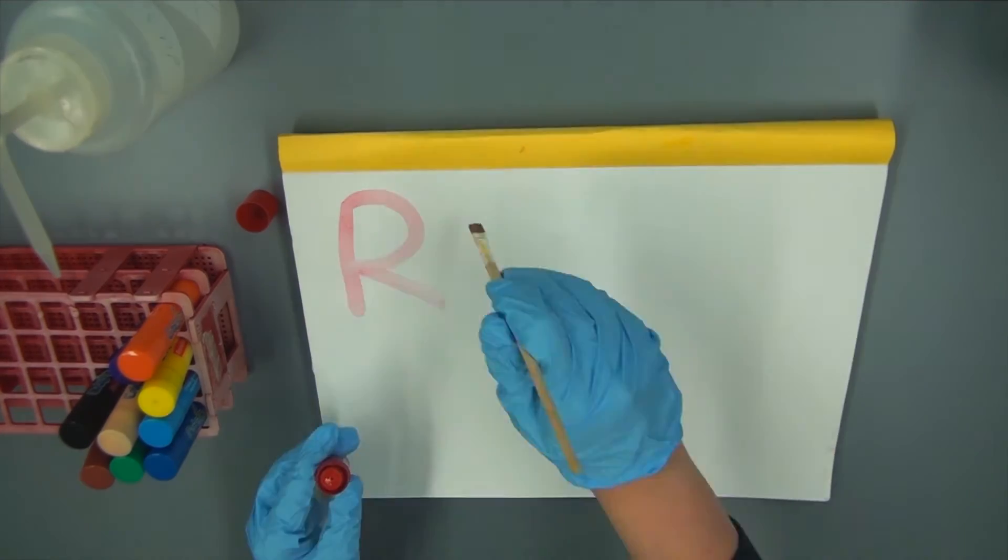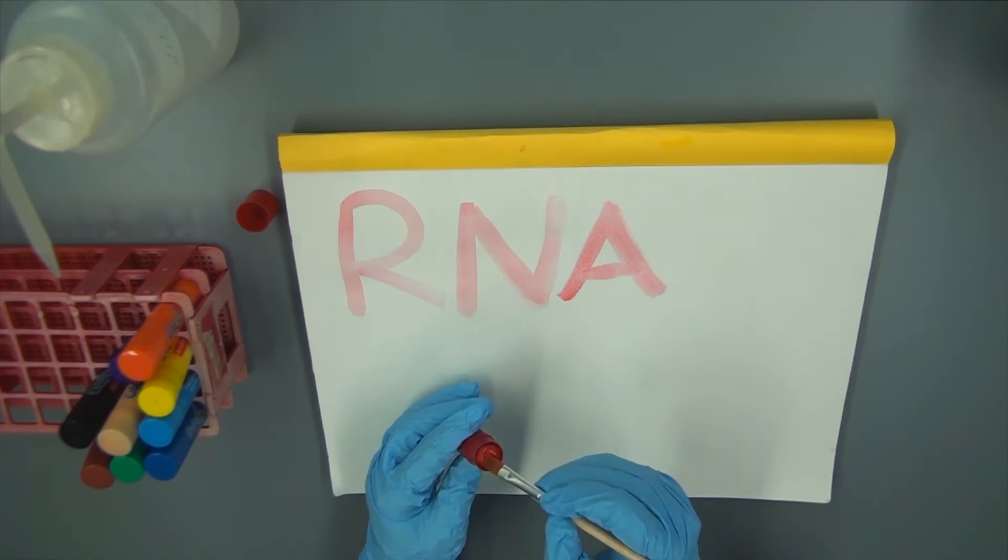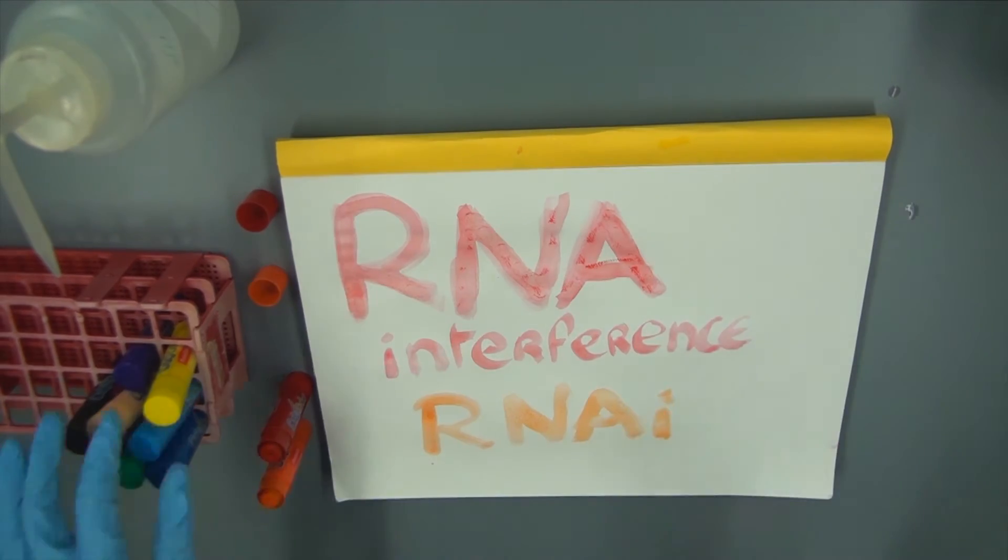RNA interference, or RNAi, is a process used by eukaryotic cells to control their levels of protein expression.